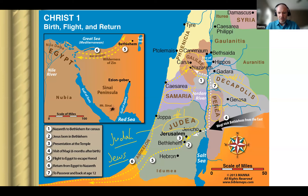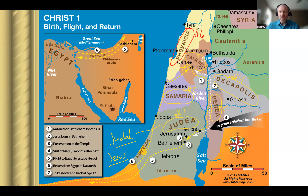Number six is Phoenicia. Phoenicia was in the northern area of the land of Palestine and was a more Gentile area. You can see the name Tyre there, which was one of the major cities. Phoenicia was another area in first century Palestine.